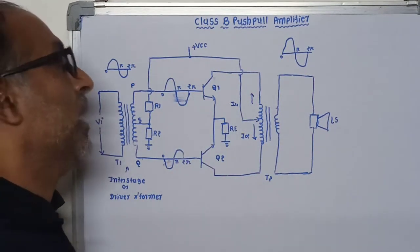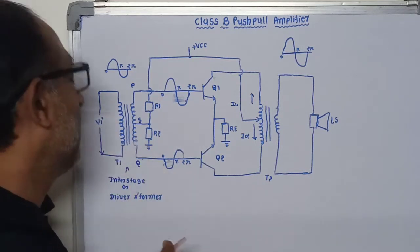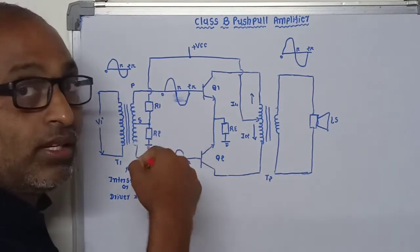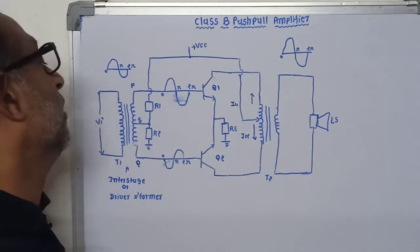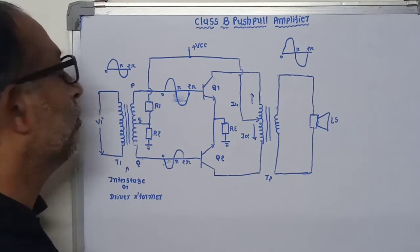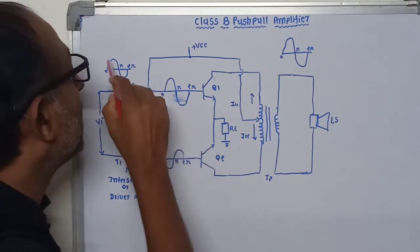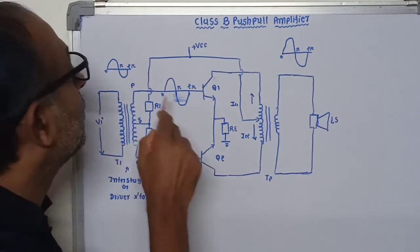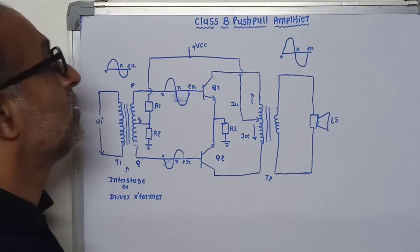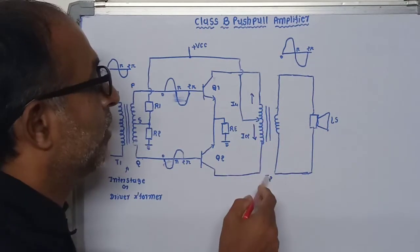That means there is no wastage of power, which is the main advantage. When the input signal is applied at the primary winding of transformer T1, this signal is split into two signals which are 180 degrees out of phase with each other. Terminal P becomes positive and terminal Q becomes negative with respect to center terminal S. During the positive half cycle, terminal P becomes positive, meaning the base of Q1 becomes positive, and the collector current starts to flow. This collector current passes through the upper part of the primary winding of transformer T2.